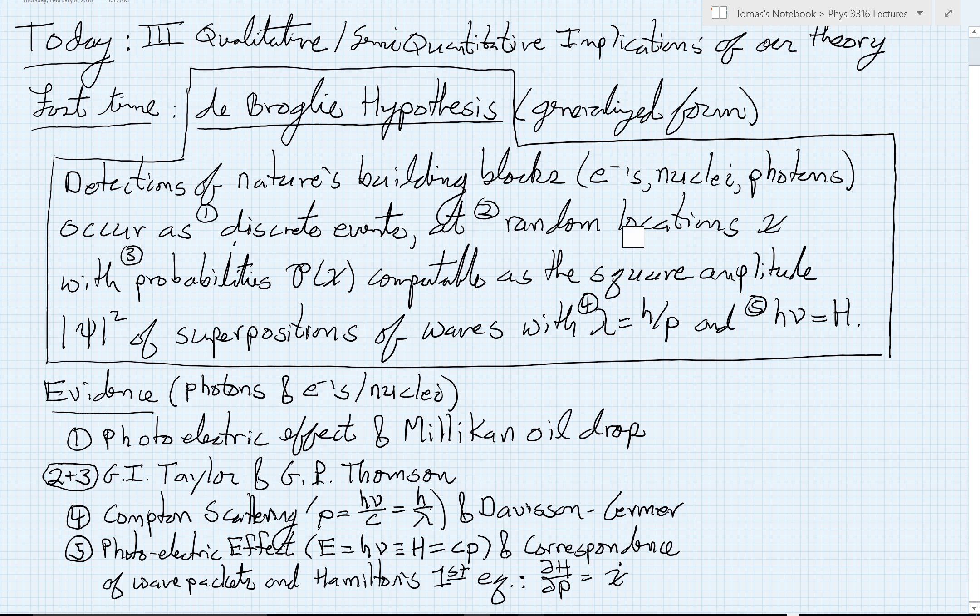Now, these detections do happen at random locations that occur with certain probabilities. And the evidence for that fact, that they are random, but yet guided by a probability, comes very clearly for the photons from the G.I. Taylor experiment, and also from the corresponding G.P. Thompson experiment for the electrons. Remember here, we saw very beautiful diffraction patterns emerging. But the statistics show, and you can do these with very dim sources, that even when the particles go in one at a time, they somehow spookily build up these very coherent overall patterns. And the only way that can happen, because the particles the experiments show are behaving statistically independently, is if they must be arriving at random locations, but guided by particular probability distribution.